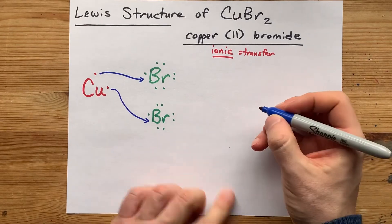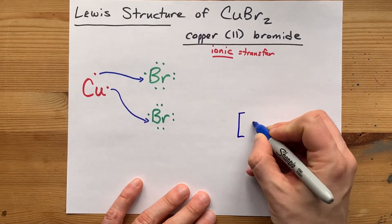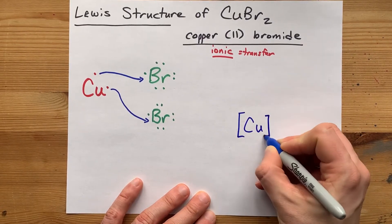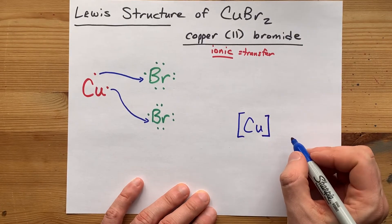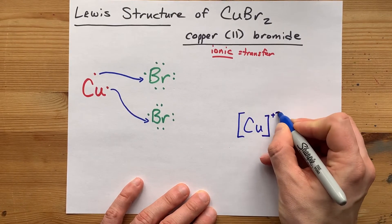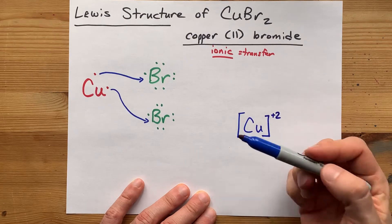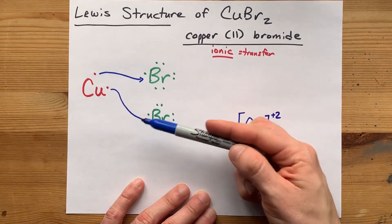To draw the completed Lewis structure, you need to give yourself the Cu atom with no valence electrons around it, and a +2 charge because it gave away 2 minus charged electrons.